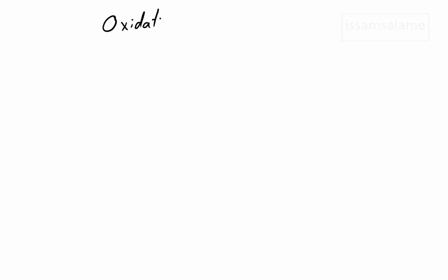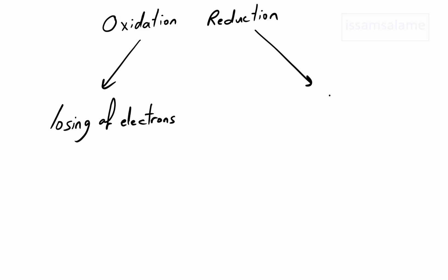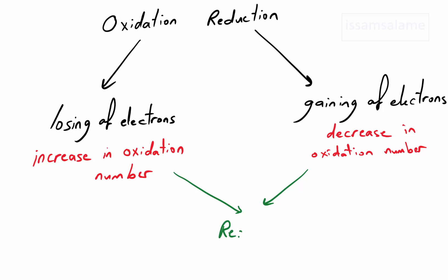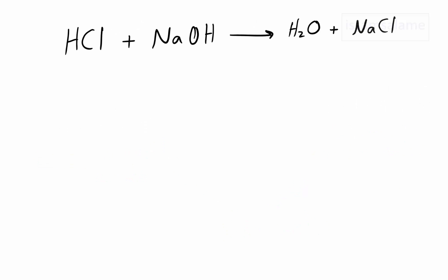Oxidation is defined as the losing of electrons, while reduction is defined as the gaining of electrons. Oxidation happens when the oxidation number increases, while reduction happens when the oxidation number decreases. Usually they happen at the same time, and we call that a redox reaction.